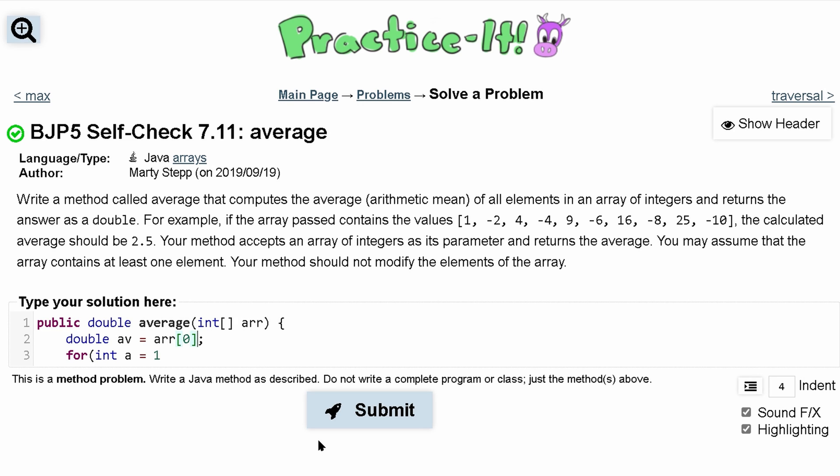That way we can skip over the first element. We're going to run this as long as a is less than arr.length, and we just increment a every single time so we can eventually break out of this loop.